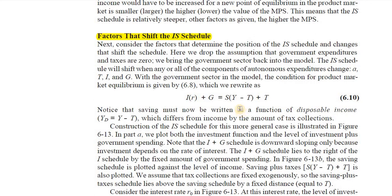Let's talk about the factors that can cause a shift in the IS schedule. We need to incorporate the government sector because when we were deriving the IS schedule, we omitted the government sector, but in reality government is a major component of the economy. The government sector comprises G, which stands for government expenditure, plus taxes.